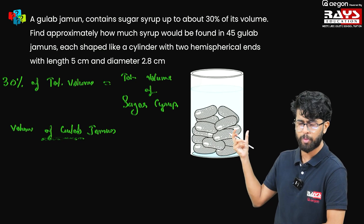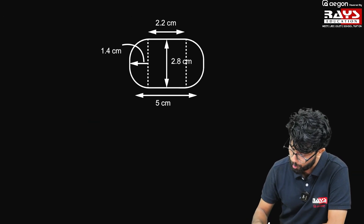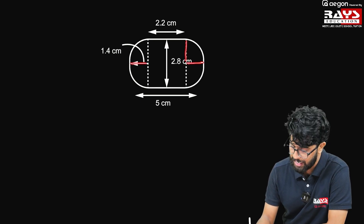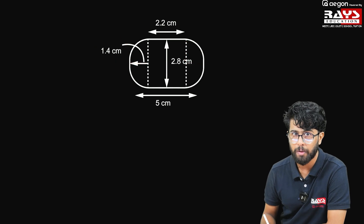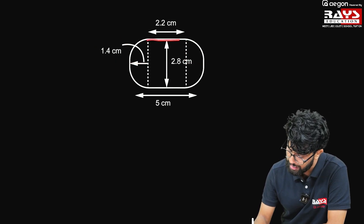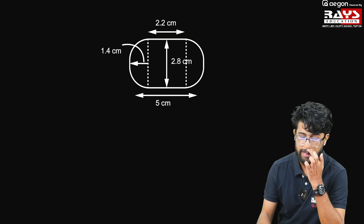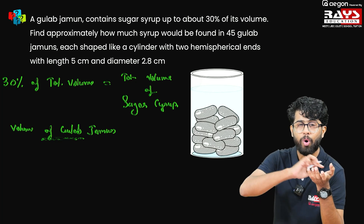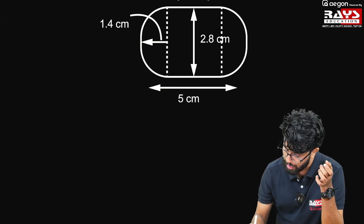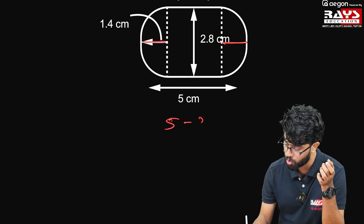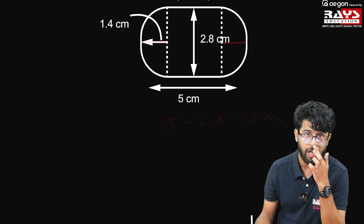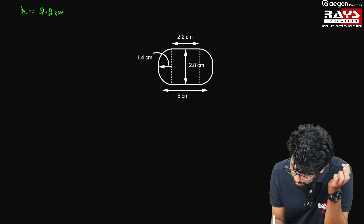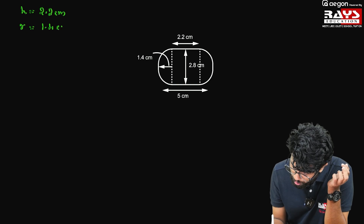I have drawn an actual figure of Gulab Jamun. The radius of both the hemisphere and the cylinder is 1.4 cm, and the height of the cylinder is 2.2 cm. Most students make the mistake of taking the height of the cylinder as 5 cm — but 5 cm is the length of the whole Gulab Jamun. We have to subtract 1.4 from both ends. So 5 minus 2.8 gives 2.2 cm as the height of the cylinder. Height equals 2.2 cm and radius equals 1.4 cm.